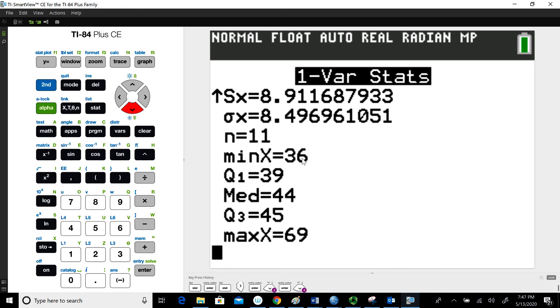So we have our minimum value, which is 36, our first quartile, which is 39, our median, which is 44, our third quartile, which is 45, and our maximum value, which is 69.